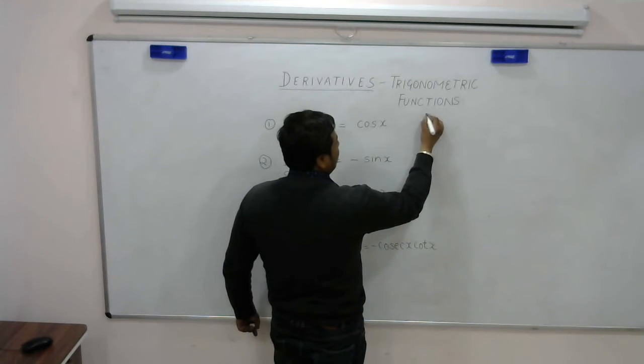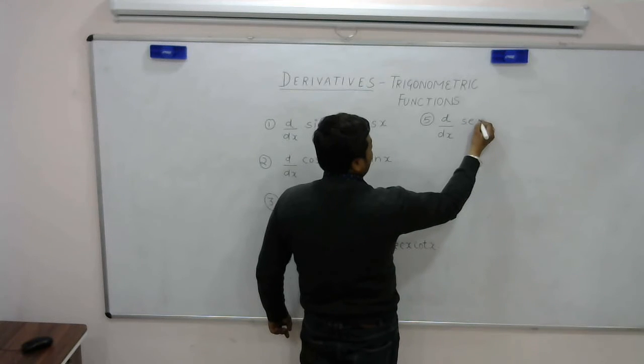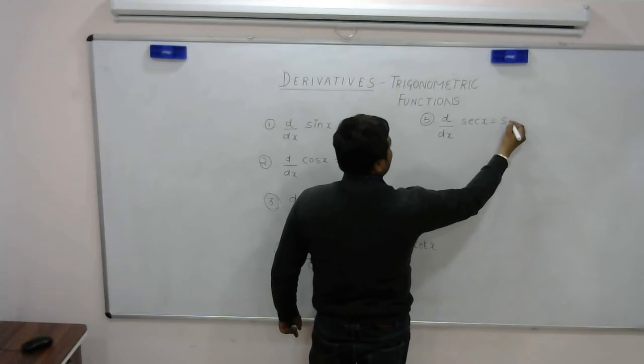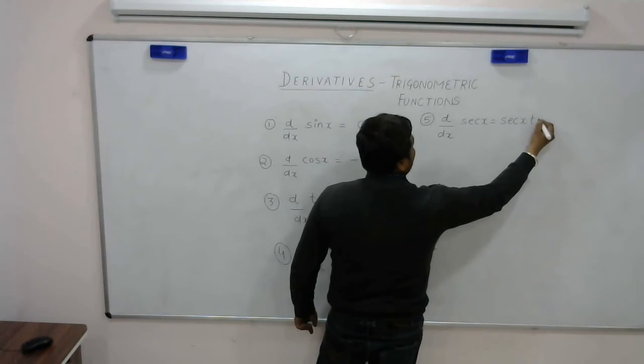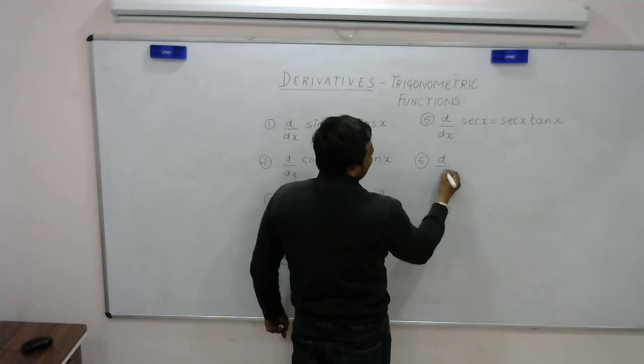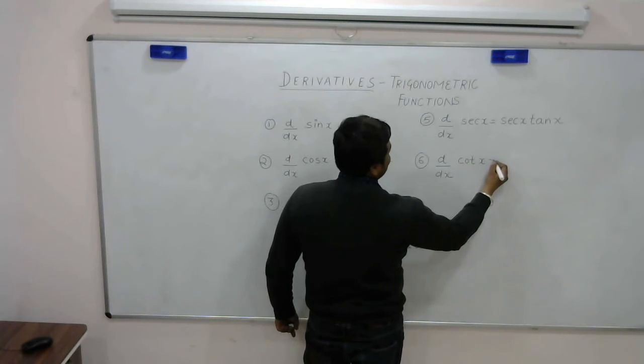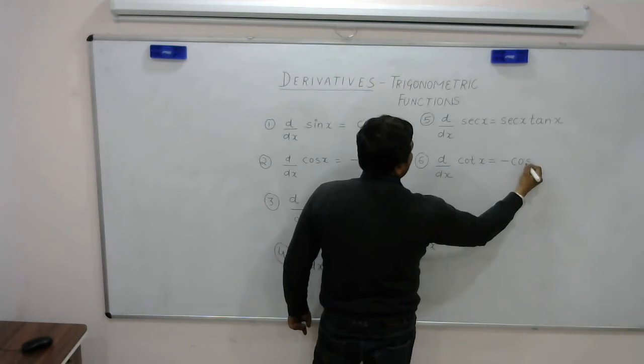Fifth is derivative of secant x, that is secant x into tan x. Last is derivative of cosecant x, which is minus cosecant x cot x.